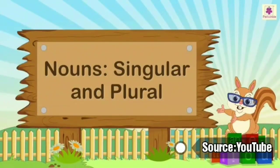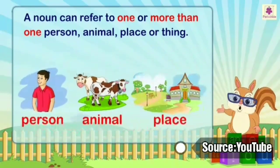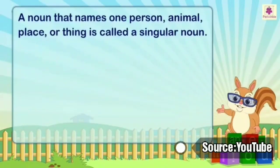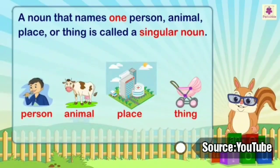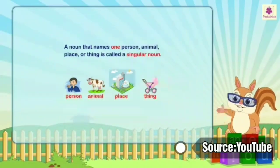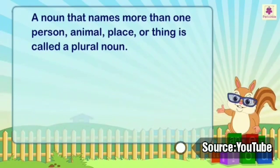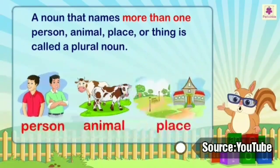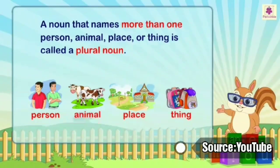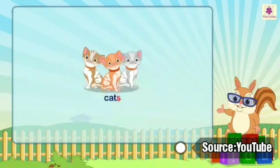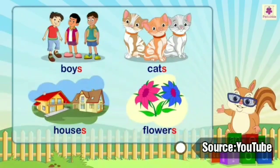Nouns — singular and plural. A noun can refer to one or more than one person, animal, place, or thing. A noun that names one person, animal, place, or thing is called a singular noun. A noun that names more than one person, animal, place, or thing is called a plural noun. For example: boys, cats, houses, flowers. We add S to most nouns to show plural form.